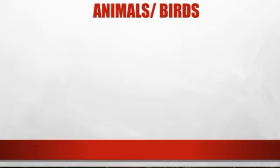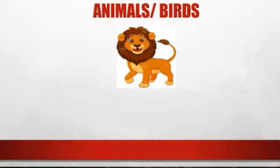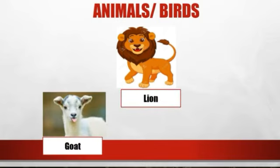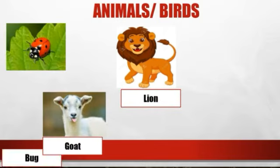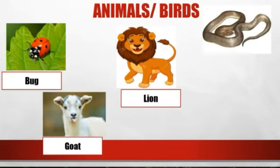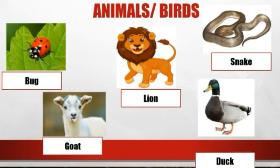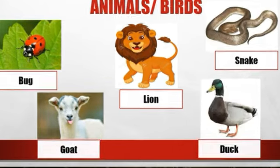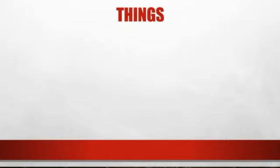Nouns can be names of animals and birds. This may include names of all wild animals, pet animals, birds, insects, and reptiles. For example: lion, goat, bug, snake, duck, etc.